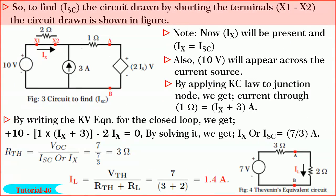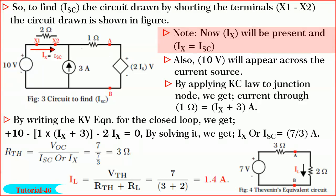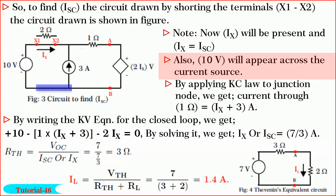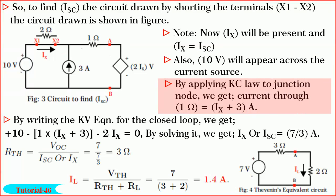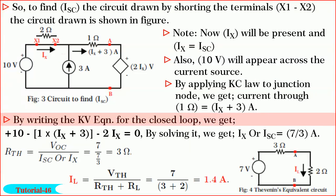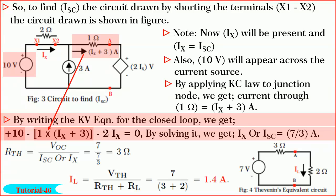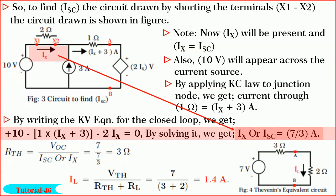Friends, to find ISC, the circuit drawn by short-circuiting the terminals X1 and X2 is shown in the figure. Note that now IX will be present, and in fact IX equals ISC. Also observe that 10 volts will appear across the current source of 3 amperes. By applying Kirchhoff's current law to the junction node, we get current through 1 ohm equals IX plus 3 amperes. By writing Kirchhoff's voltage equation for the outer closed loop, we get plus 10 minus 1 ohm into (IX plus 3 amperes) minus 2IX equals 0. By solving, we get IX or ISC equals 7 divided by 3 amperes.